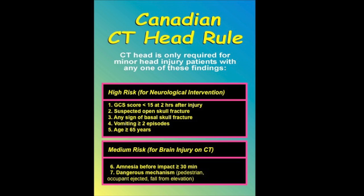The Canadian CT Head Rule is relatively simple and comprised of five high-risk criteria and two medium-risk criteria. The high-risk criteria will identify anybody who needs neurosurgical intervention, and this includes: having a GCS score below 15 at two hours after the injury, suspected open skull fracture based on a directed blow with an open wound, any classical signs of basal skull fracture such as raccoon eyes, CSF leak, or Battle's sign, vomiting two or more episodes, and age 65 or greater.